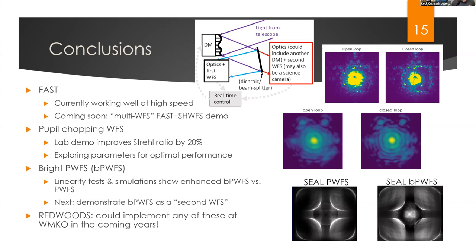Question: Why can't you just replace the first Shack-Hartmann wavefront sensor with some of these improved wavefront sensing technologies? Answer: For the bright pyramid wavefront sensor, you actually could. But for the other two, you can't — it has to do with the dynamic range of the wavefront sensor. The strength of aberration going in before being corrected is too large for those two; the atmosphere produces too much turbulence. You'd need a first-stage correction for them to close the loop. And with the bright pyramid sensor, we think it would actually be better in a second-stage configuration for the same reason — dynamic range.